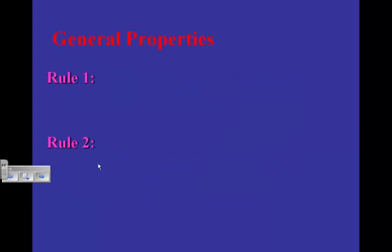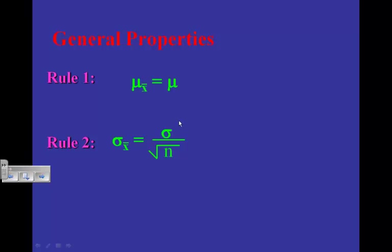General properties — two things to write down. Rule number one: μ sub x-bar equals the population parameter μ. Rule number two: the standard deviation of x-bar equals the standard deviation of the population divided by the square root of n, where n is the sample size. You want to write those down — you need to know them.